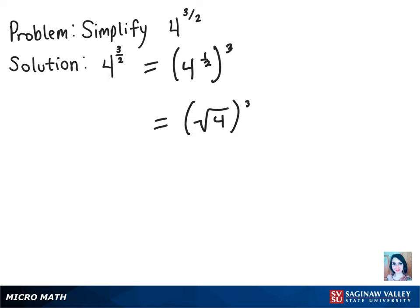And we know that the square root of 4 is 2, so that's 2 cubed. And 2 cubed is 8. And that is our final solution.